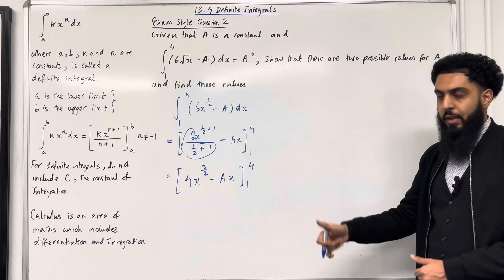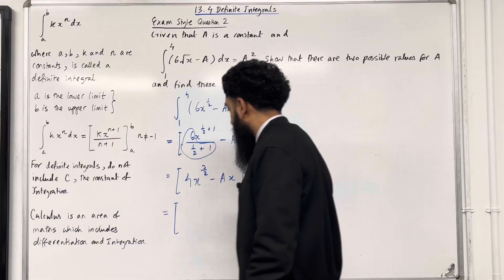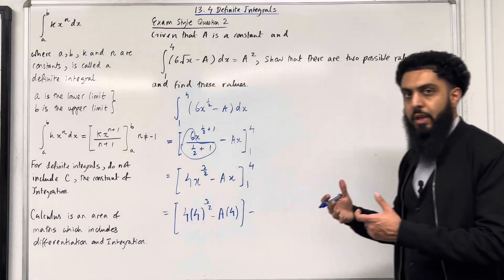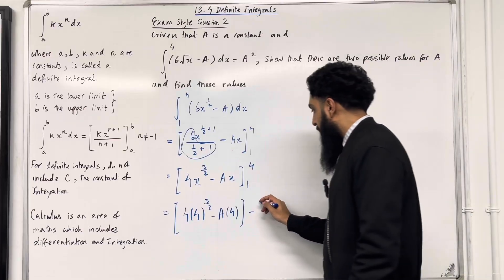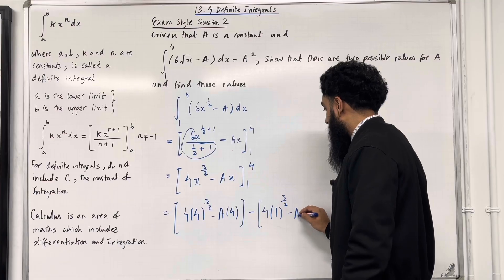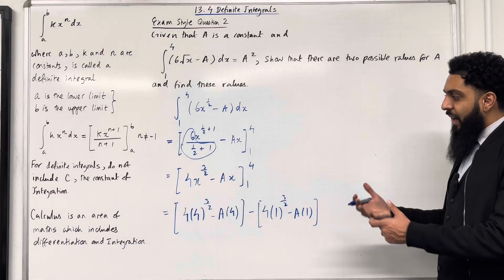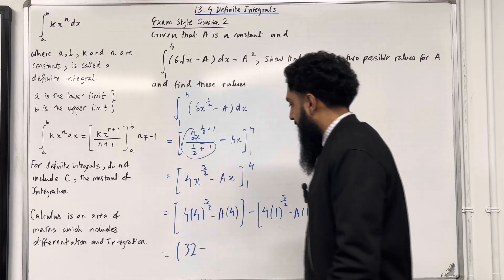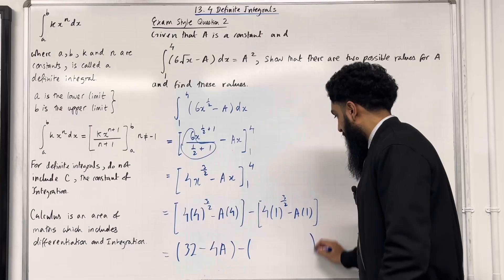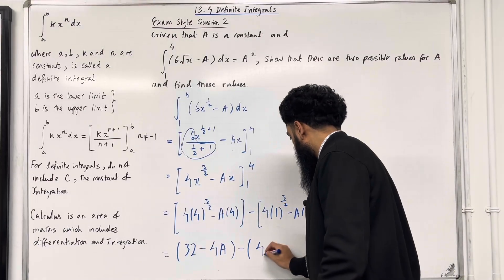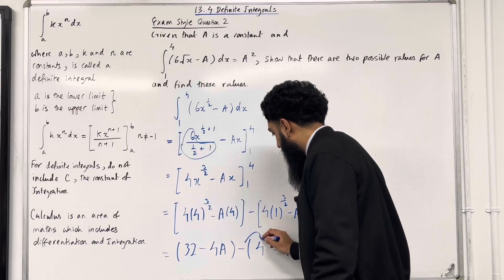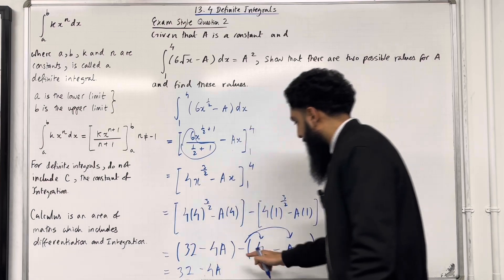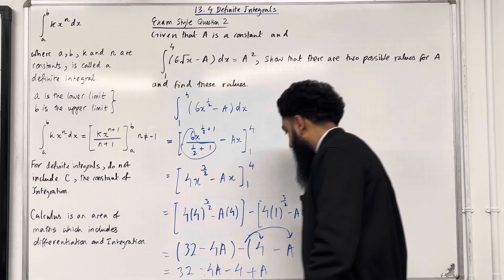Now we're going to substitute the upper limit and replace the x's with 4. So equal, open square bracket, 4 lots of 4 to the power 3 over 2, minus a lots of 4. Close square bracket. Take away, substitute the lower limit, replace the x's with 1: open square bracket, 4 lots of 1 to the power 3 over 2, minus a lots of 1. Close square bracket. Simplifying each bracket: the first term becomes 32, minus 4a. Then this minus will affect everything inside the second bracket, so expanding we get minus 4, plus a. Writing it all out: 32 minus 4a, minus 4, plus a.